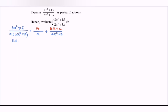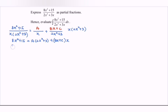So we write: 8x² plus 15 equals a times (2x² plus 3) plus (bx plus c) times x. We expand the right-hand side to get: 2ax² plus bx² plus 3a plus cx.